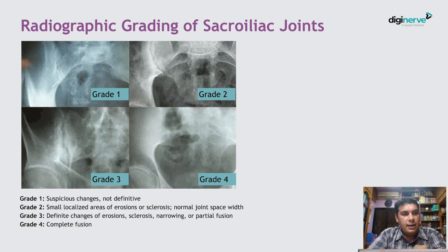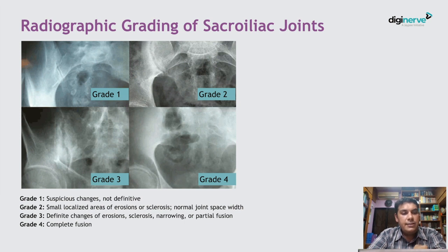Grade 1 shows only suspicious changes, but not definitive. Grade 2 is when there are small localized areas of erosion or sclerosis, but the joint space is still intact and normal. Grade 3 is when there are definite changes of erosion, sclerosis, and some narrowing or partial fusion. Grade 4 is complete fusion — that is grade 4 sacroiliitis.